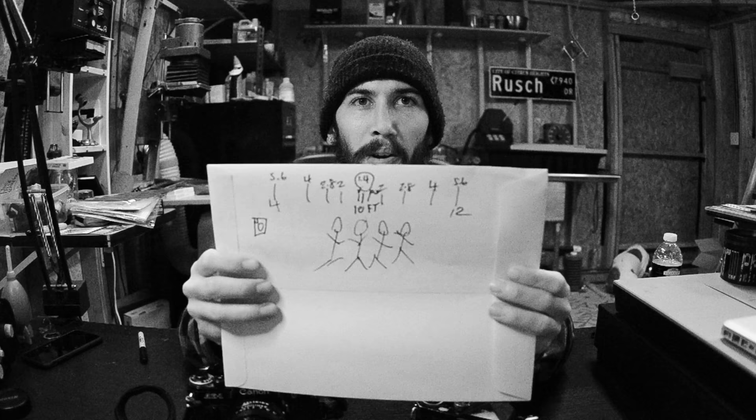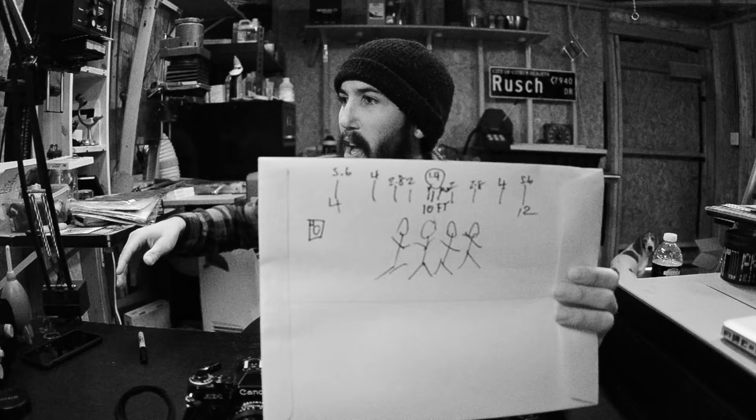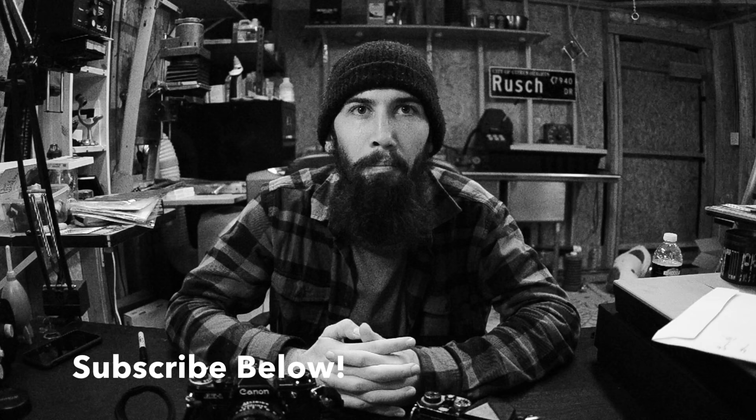I hope you guys learned something. I really feel like I summed it all up pretty quickly when I did the diagram with me and my buddy Greg. When you focus on a subject, it's a distance, and by stopping down your aperture, you're increasing that distance. Think of it as a hula hoop around your subject — by stopping down, you're making that hula hoop bigger, increasing the subject's focus around him as well as your chosen distance. Thanks for watching, I really appreciate it. If you guys have been enjoying my videos, please subscribe below. Until next time, keep on shooting.